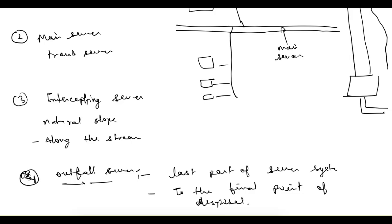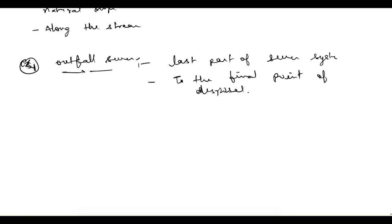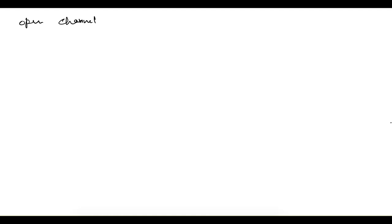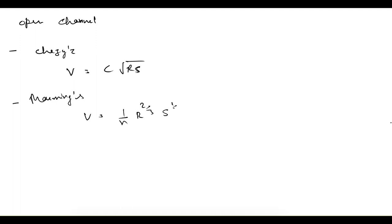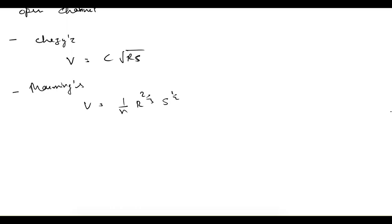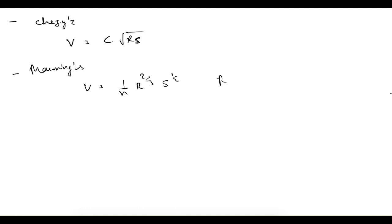Now let's see some design data and important points. Since the sewer is designed as open channel flow, open channel flow formulas are used. Chezy's formula: V = C √(RS), can be used for sewer design. Manning's formula: V = (1/n) × R^(2/3) × S^(1/2), where S is the channel slope and R is the hydraulic mean depth, defined as R = A/P. These are the standard formulas used for sewer design.